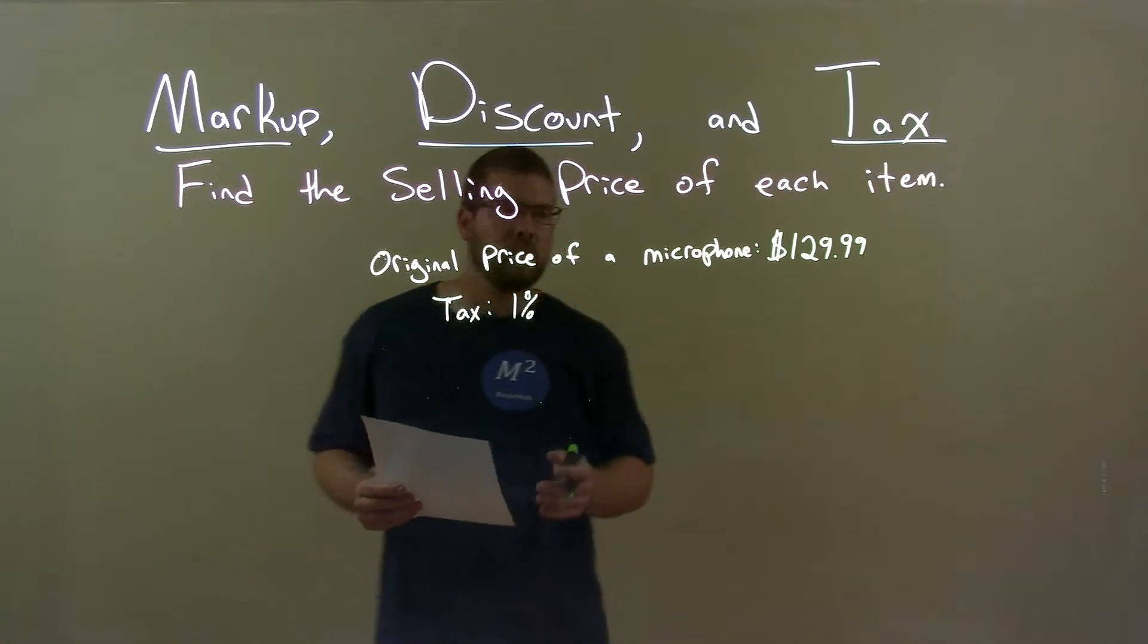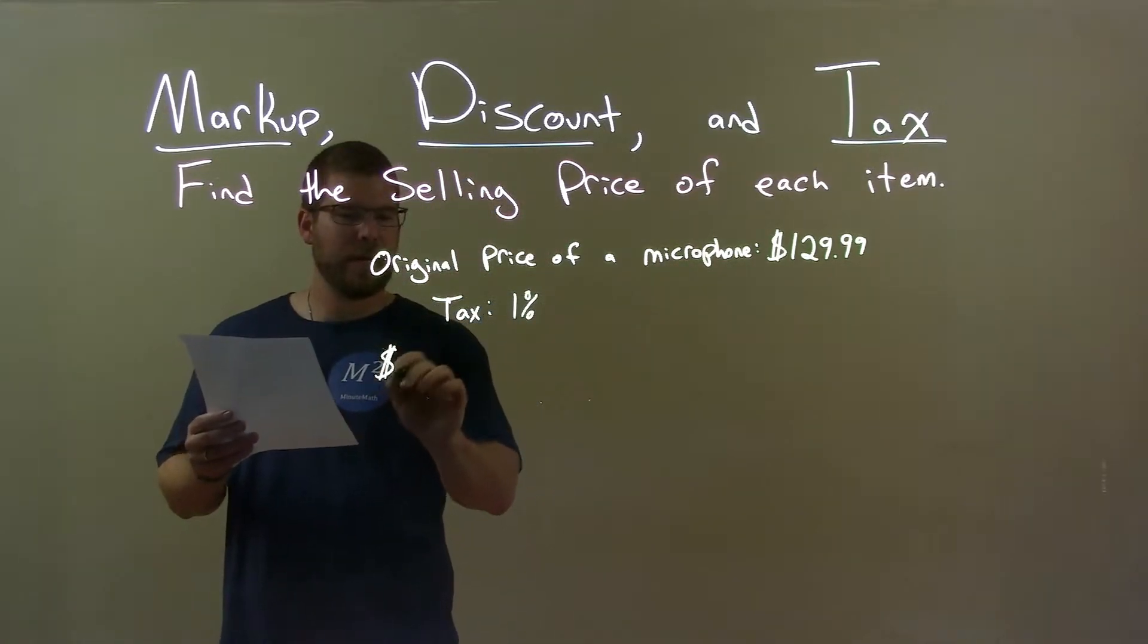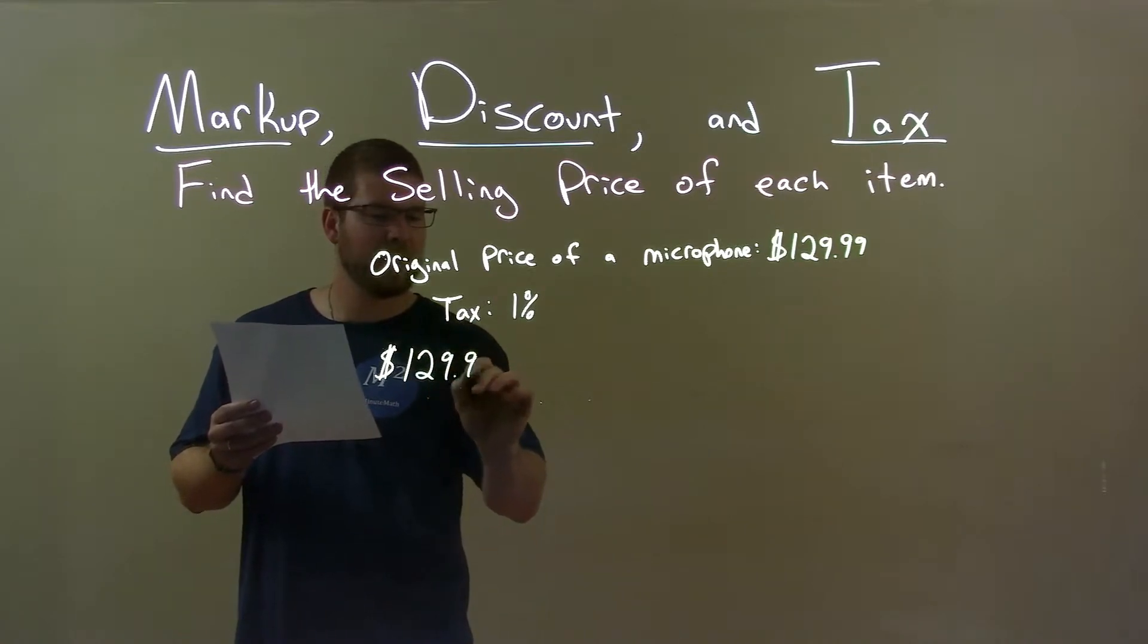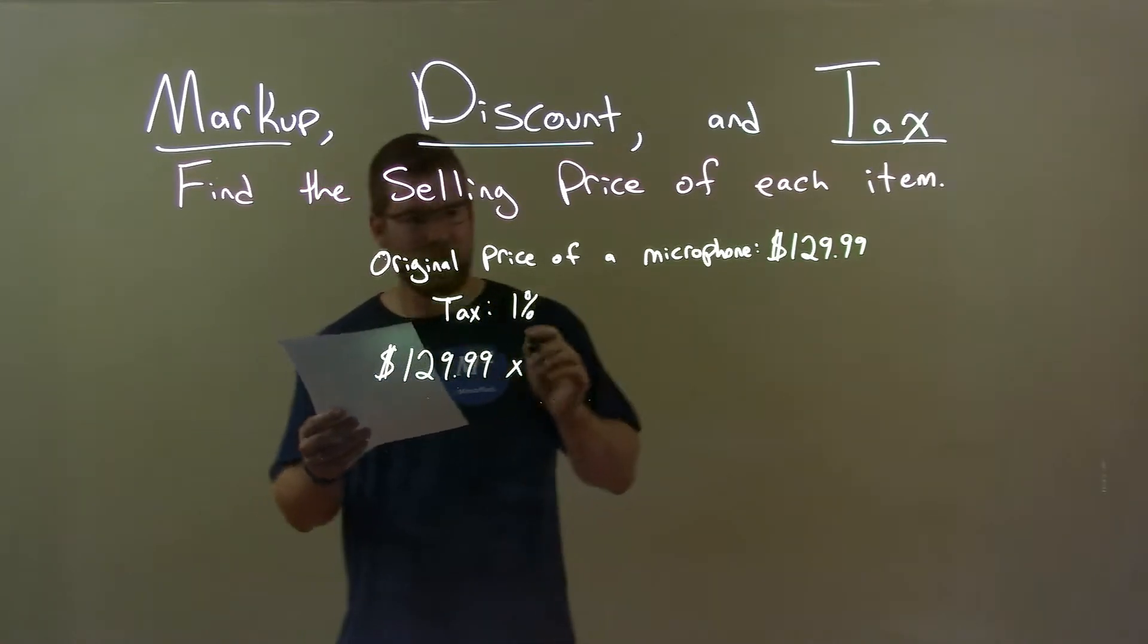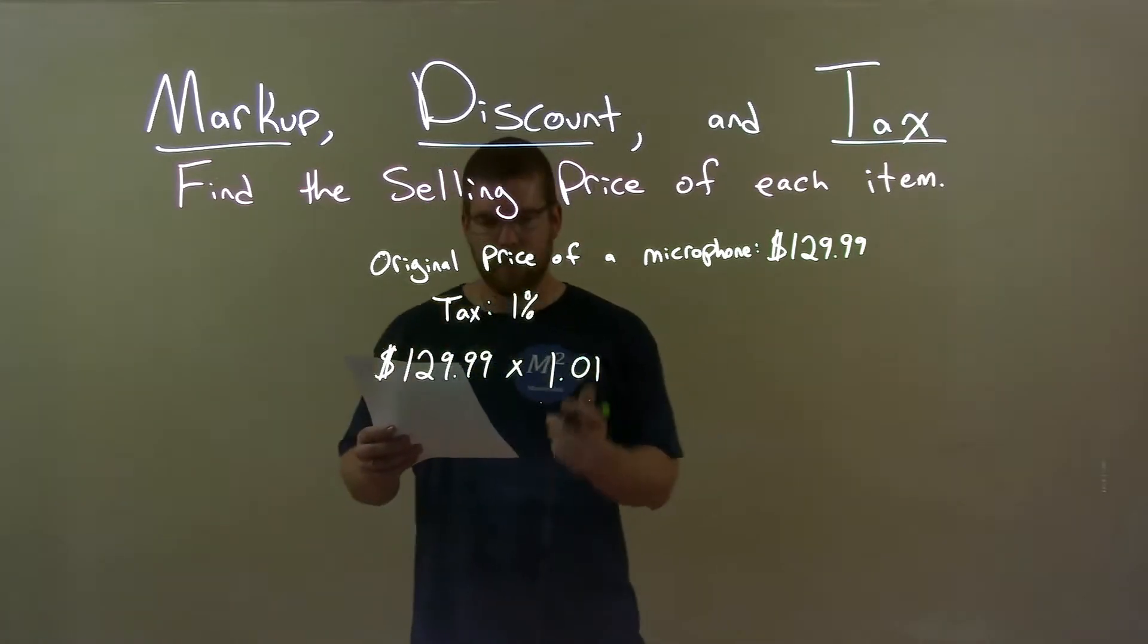So what do we need to do? Well, we take the original microphone price, $129.99, then we multiply by a tax of 1.01. That's a nice little tax there, okay? Multiply by 1.01.